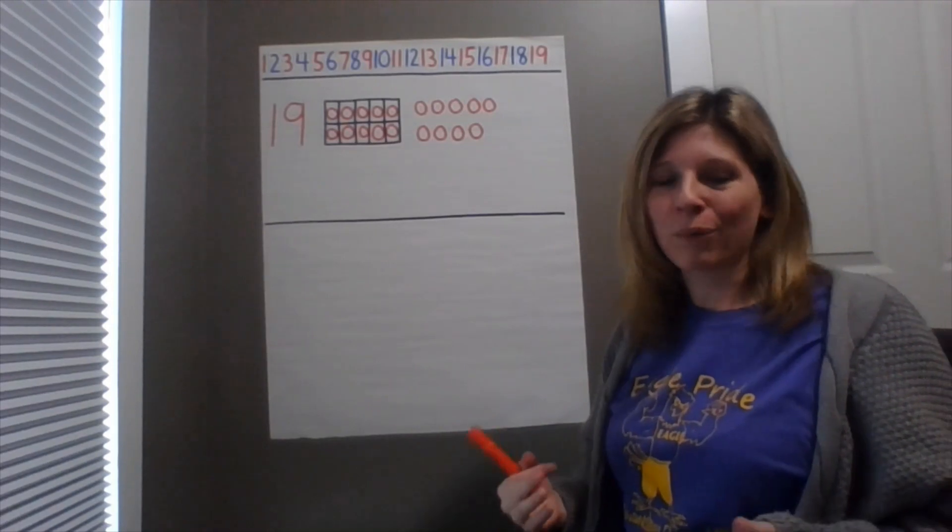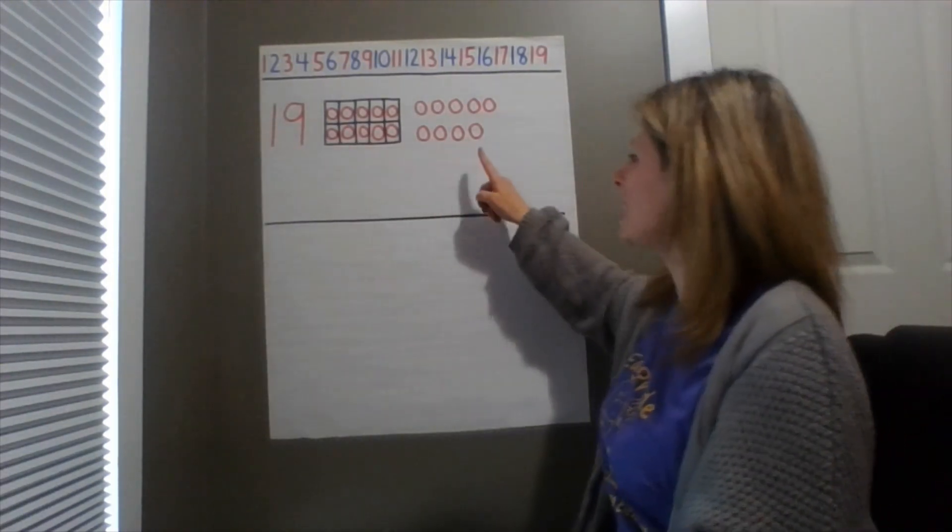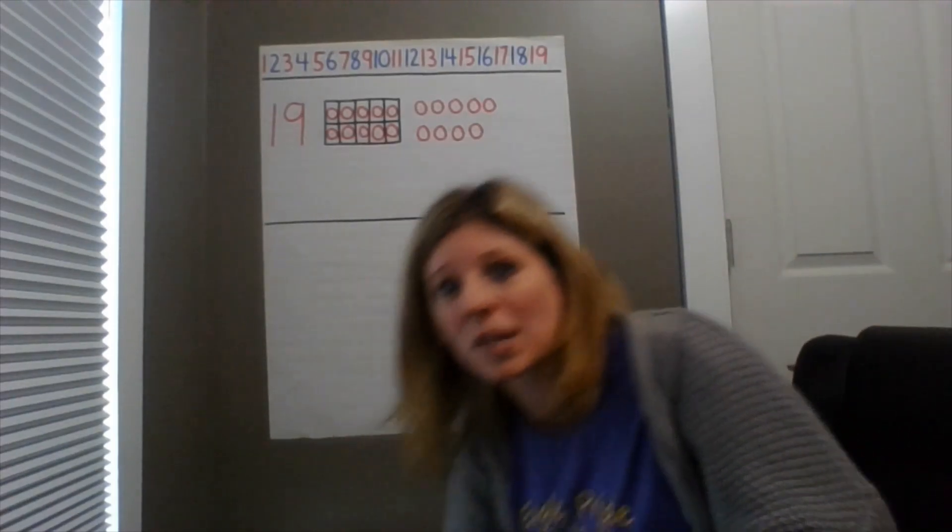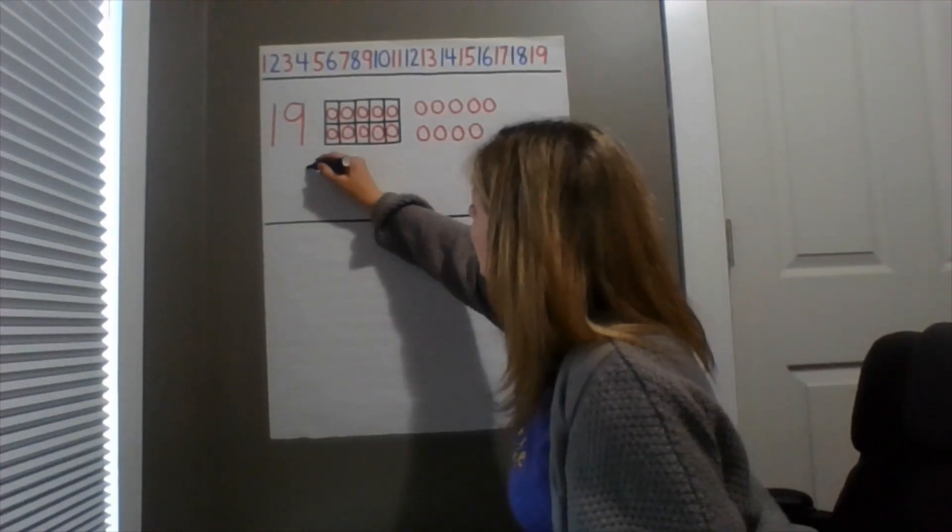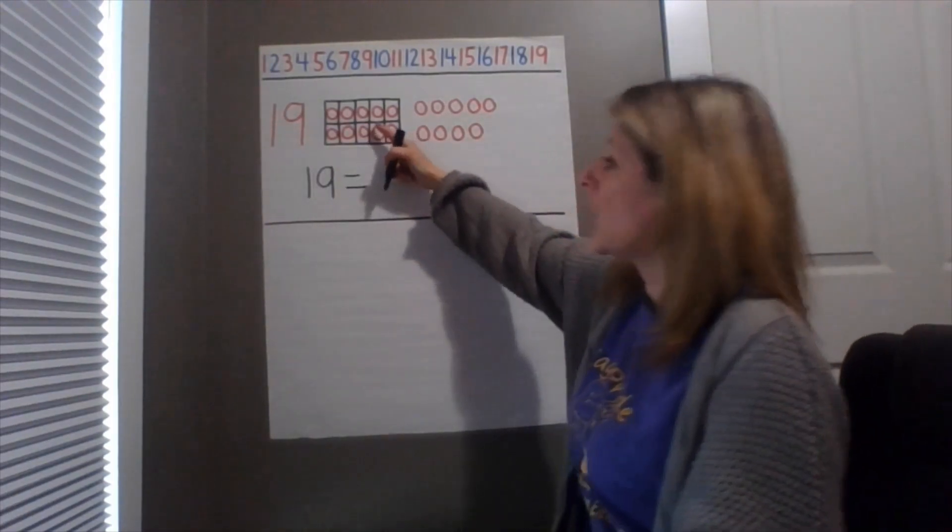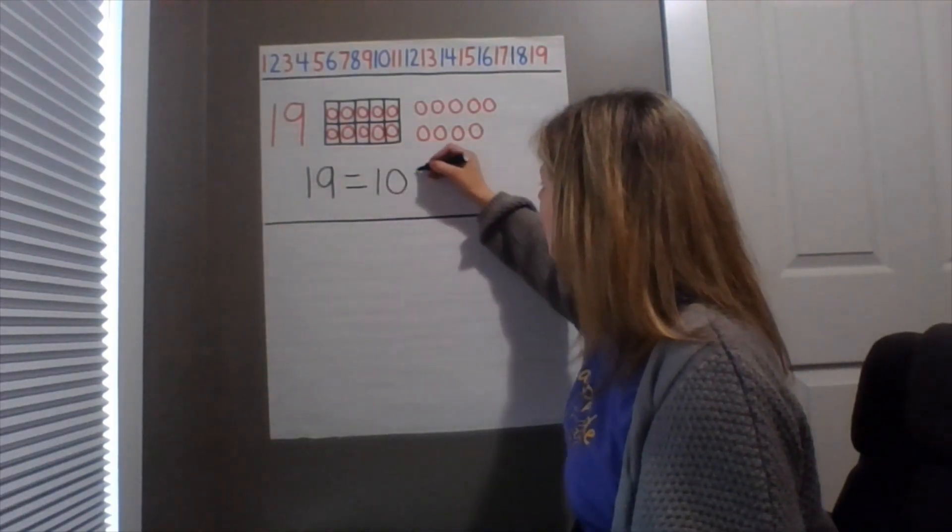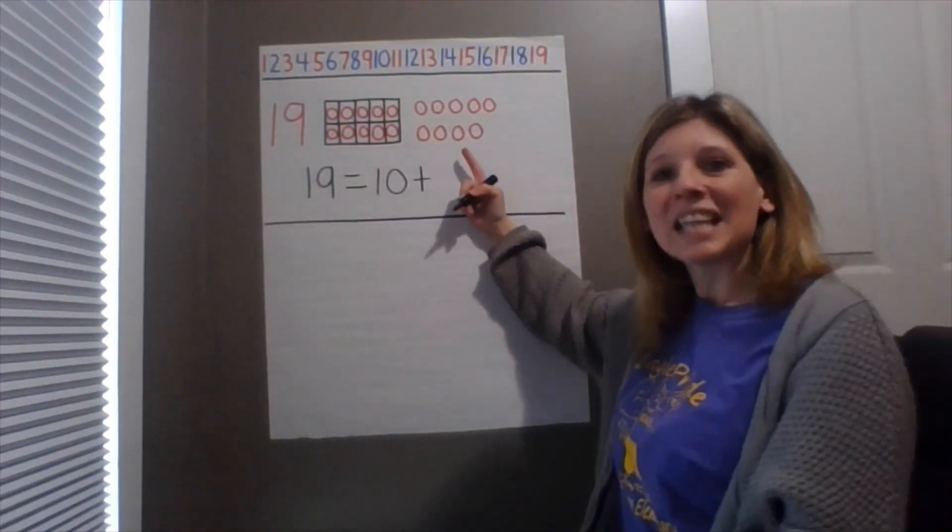So now we can answer that question. What is 19? 19 is a group of 10 plus nine more.